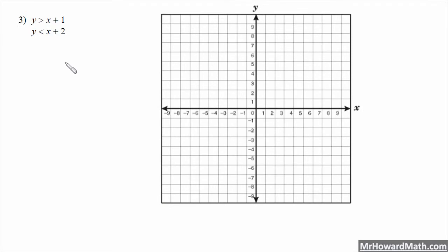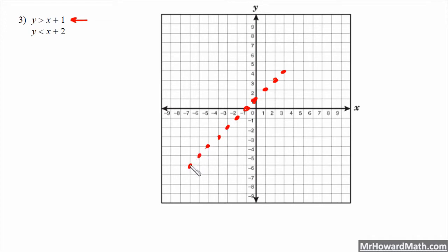In example three, y is greater than x plus 1 and y is less than x plus 2 — solving systems of linear inequalities. We'll graph the first one in red. The y-intercept is 1 and the slope is also 1, so up 1 over 1. That one is greater than only, so we need to make it dashed. I'll leave the plotted ordered pairs to represent a dashed line.